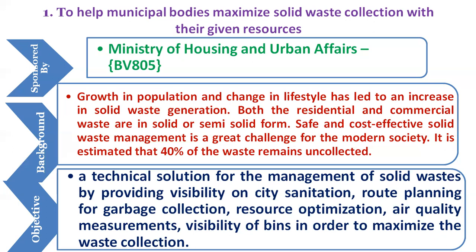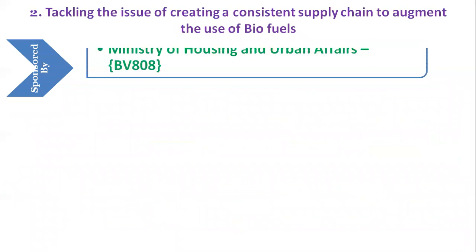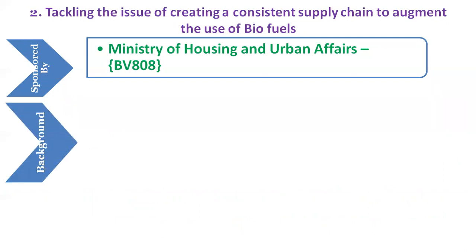The second problem statement is: suggest an improved way of tackling the issue of creating a consistent supply chain to augment the use of biofuels. This is sponsored by Ministry of Housing and Urban Affairs with code BB808.